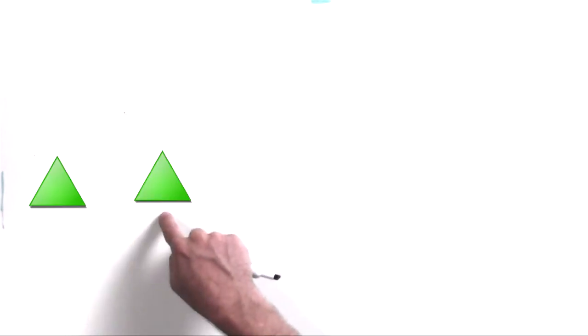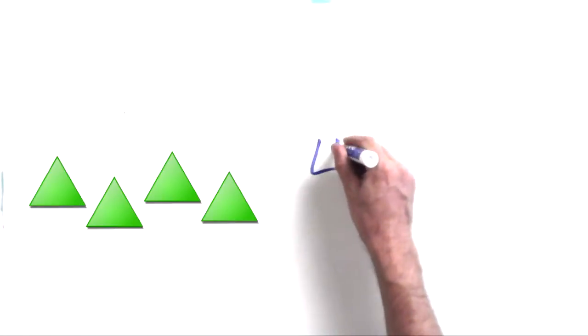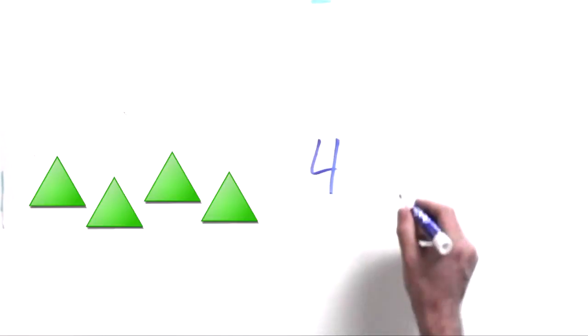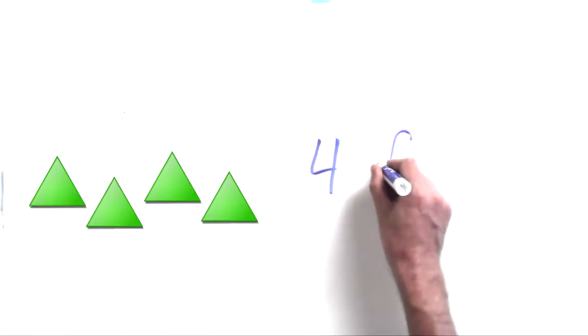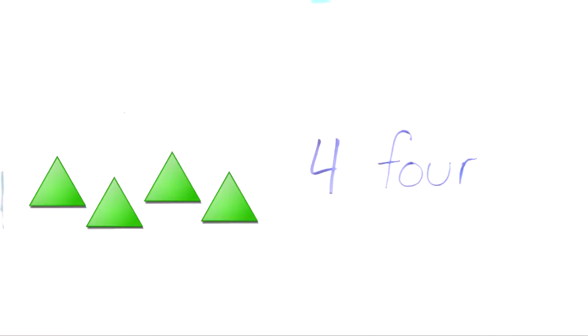And if you want to touch the screen with me, go ahead and touch the screen. It's good to touch it with your hand — it helps you remember it a little bit better if you go one, two, three, four. So we have four triangles. There's the number four. Now we're going to write the word four — F-O-U-R. There's the word four, F-O-U-R, and the number four.